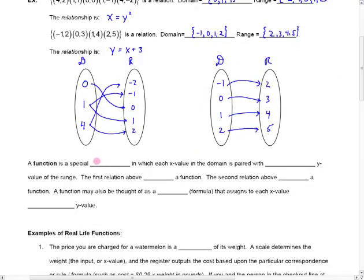Well, a function is a very special relation. In other words, a function is just a set of ordered pairs, but it's a special set of ordered pairs in which each x value in the domain is paired with only 1 y value of the range. So you'll notice up here that this x value 1 is paired with both negative 1 and 1 and so that can't be a function. So this first relation is not a function.